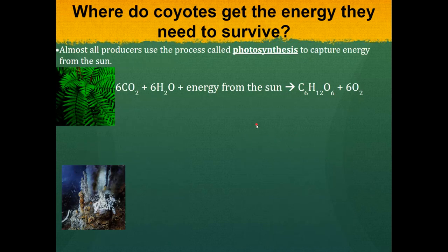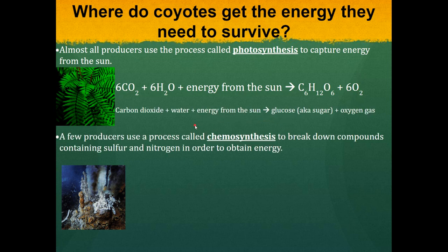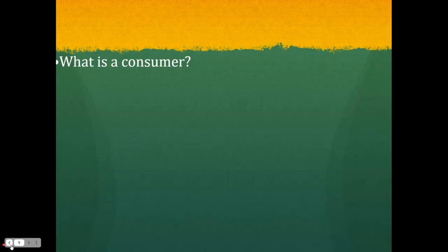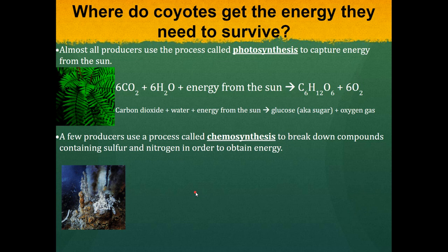Producers use the process of photosynthesis to capture energy from the sun. They need carbon dioxide, water, and sunlight energy, and these ingredients are converted into one molecule of glucose and oxygen. The few producers that use chemosynthesis break down compounds containing chemicals like sulfur and nitrogen in order to obtain their energy.